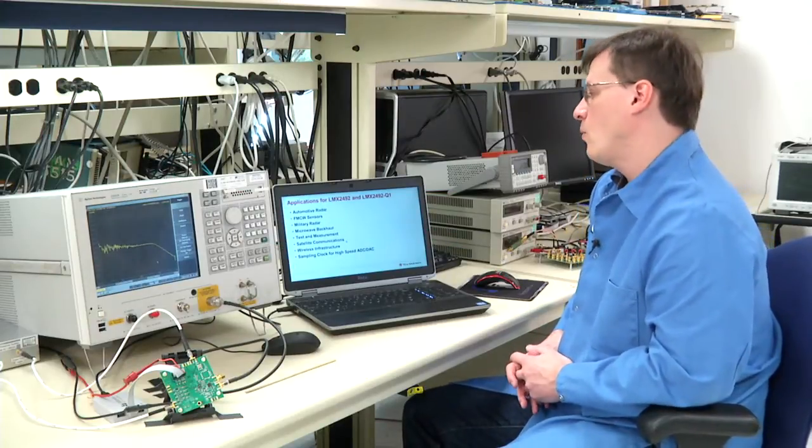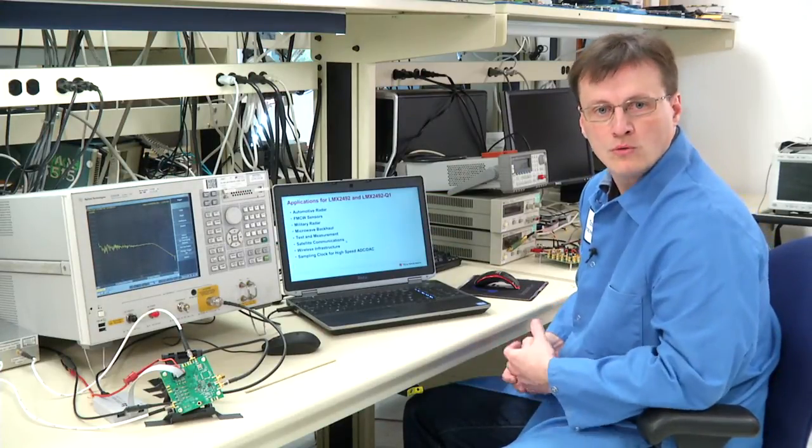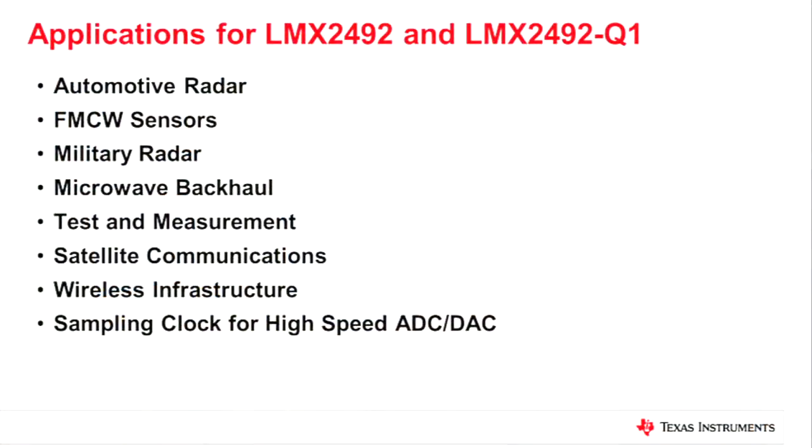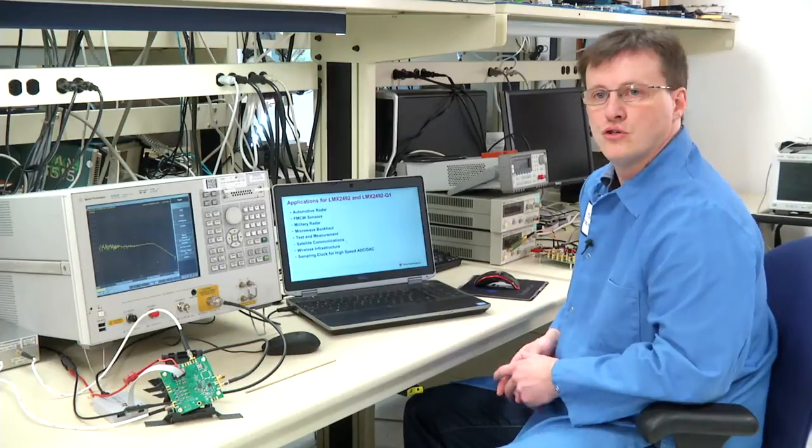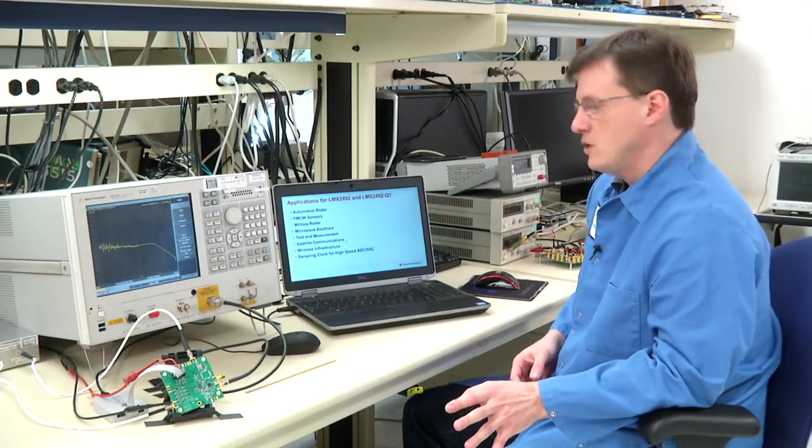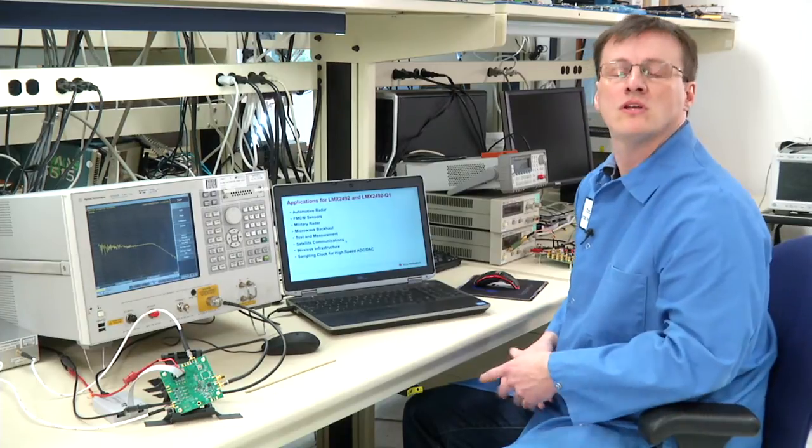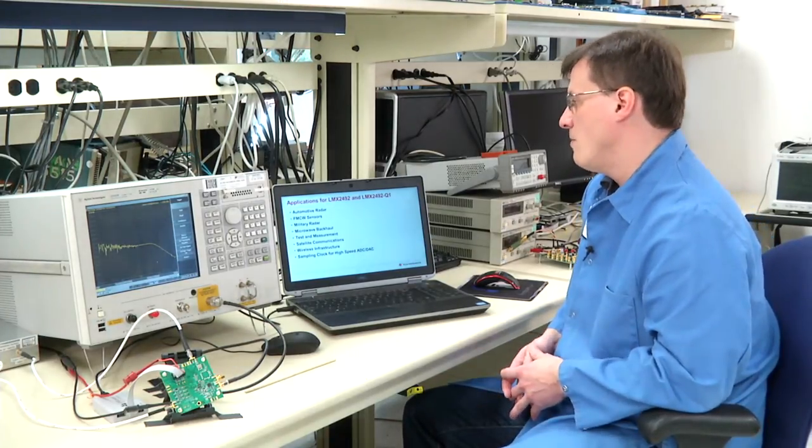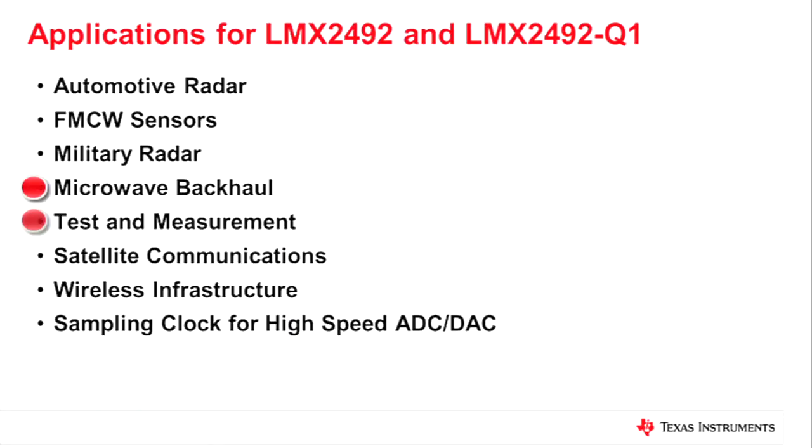What type of application would require such a part? Because of the excellent ramping capability, FMCW sensor or automotive radar comes to mind immediately. Should you not need the ramping feature but still require the excellent performance of the PLL, microwave backhaul, test and measurement, satellite communication, or wireless infrastructure would immediately come to mind. You could even think of using that fractional PLL to clock your high-performance data converter with the right VCO.